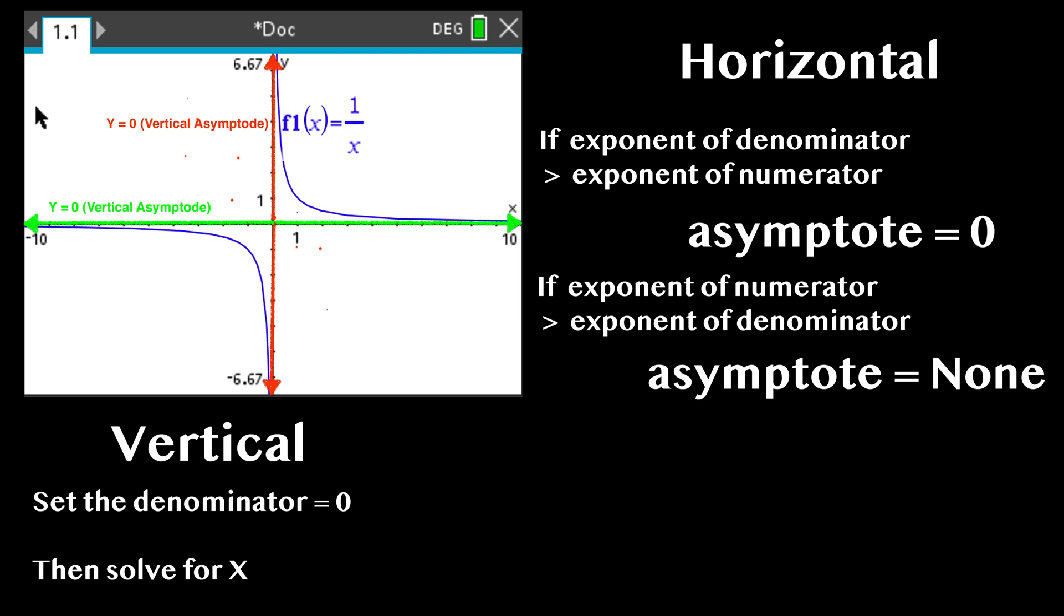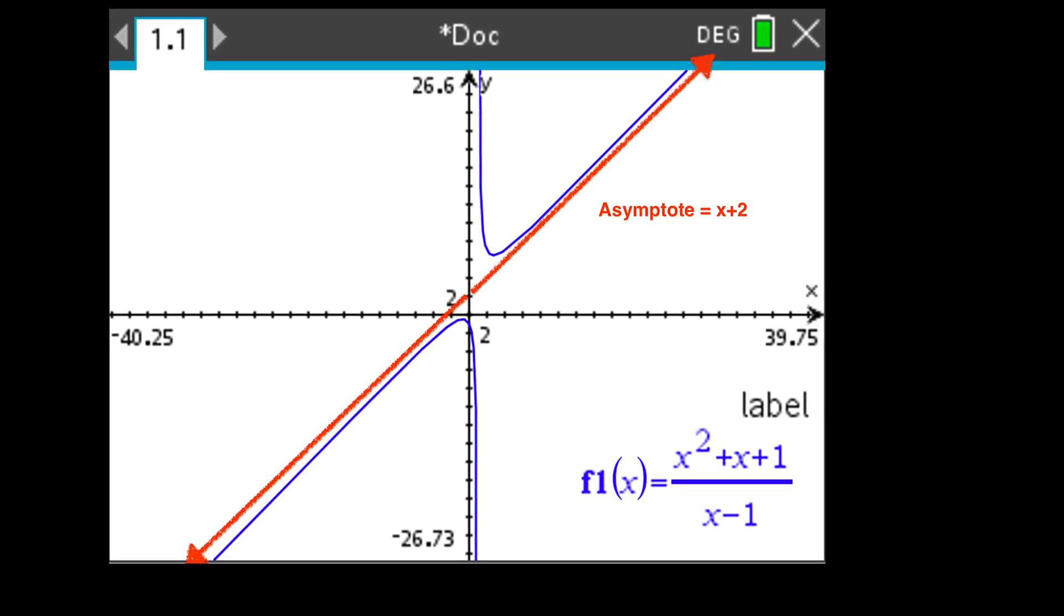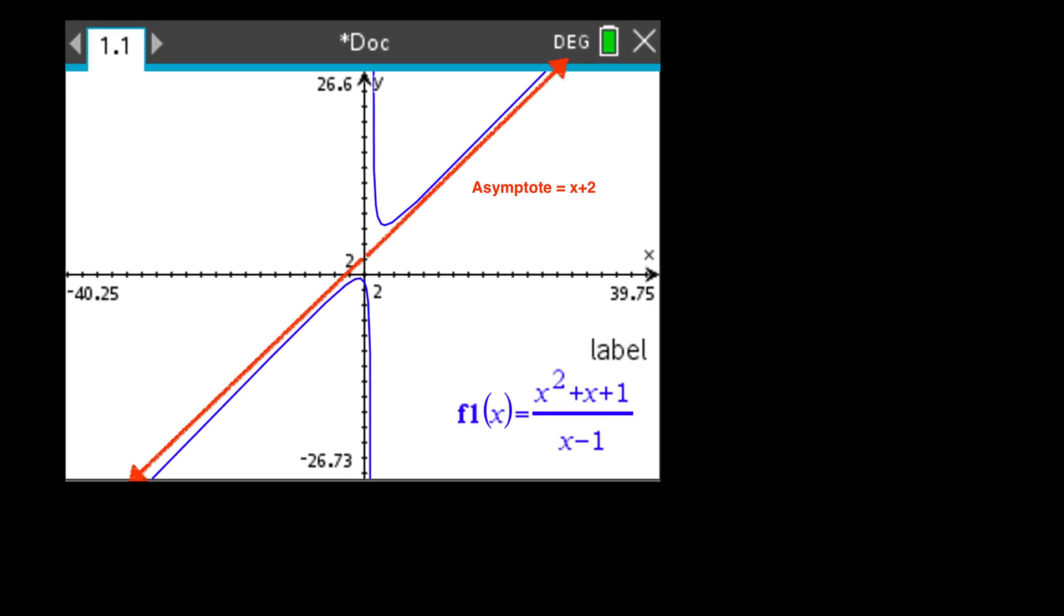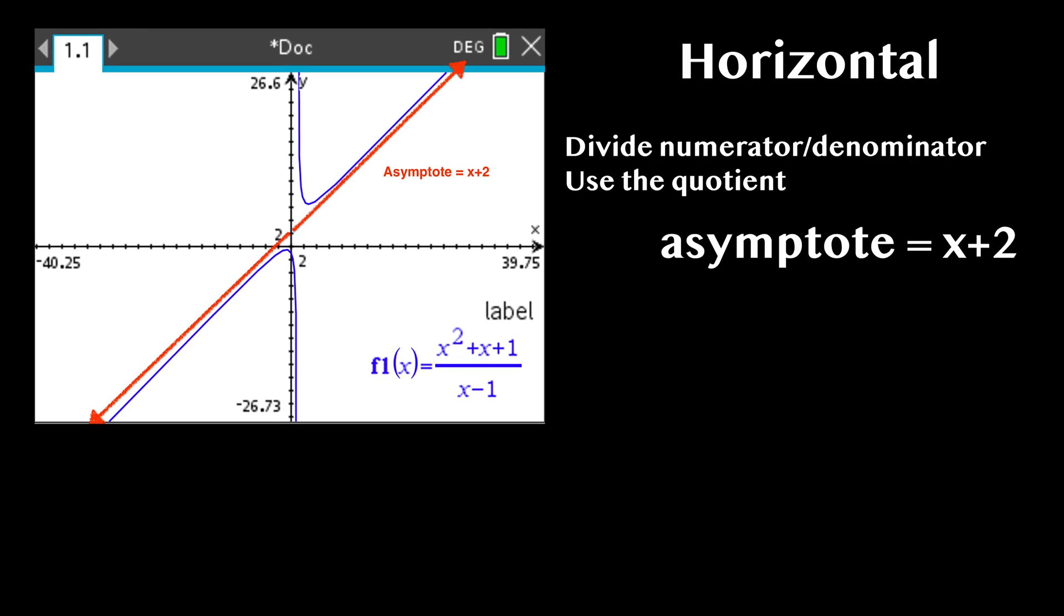Aside from the other two, in some cases, there is something called an oblique asymptote, where the degree of the denominator of a rational function is 1 less than the degree of the numerator.